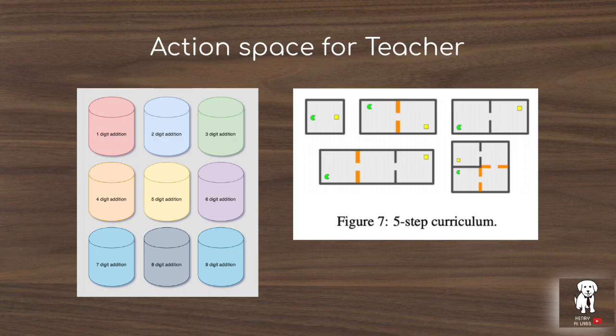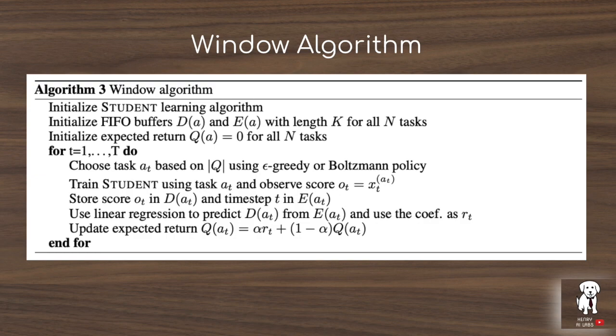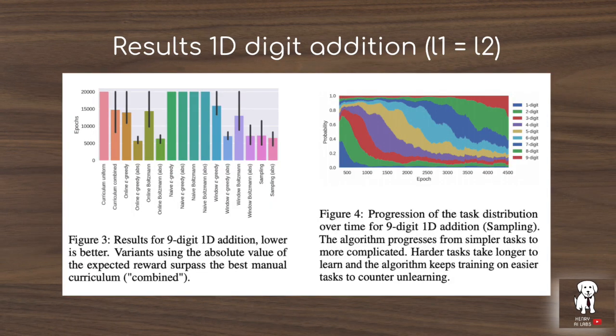In the Minecraft maze, the teacher doesn't just receive a reward based on whether the easier task it sends to train the student network improves the student's performance on the most complex maze. Rather, it's looking to make improvements on each of these sub-tasks. This models algorithms like intrinsic motivation and open-ended exploration that explore more interesting ways of optimizing neural networks.